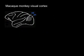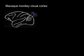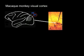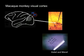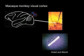In primates, the perception of motion starts in the cerebral cortex with direction-selective neurons in the primary visual cortex, or V1. That is, these neurons respond to one direction of motion, but not to the opposite direction.